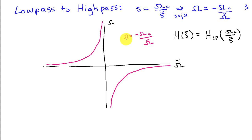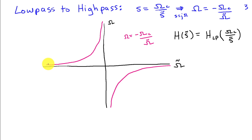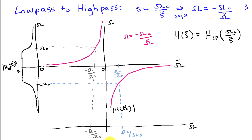To understand how this low pass to high pass frequency transformation works, we graph the function of frequency it represents: omega equals negative omega c over omega tilde. As omega tilde goes to zero from the negative side, this blows up towards positive infinity. As omega tilde goes toward zero from the positive side, this goes toward negative infinity. As omega tilde gets large in the positive direction, omega approaches zero from the negative side, and as omega tilde gets large in the negative direction, omega approaches zero from the positive side. We take our low pass filter prototype and sketch it along the omega axis, then see how it maps to the omega tilde axis.